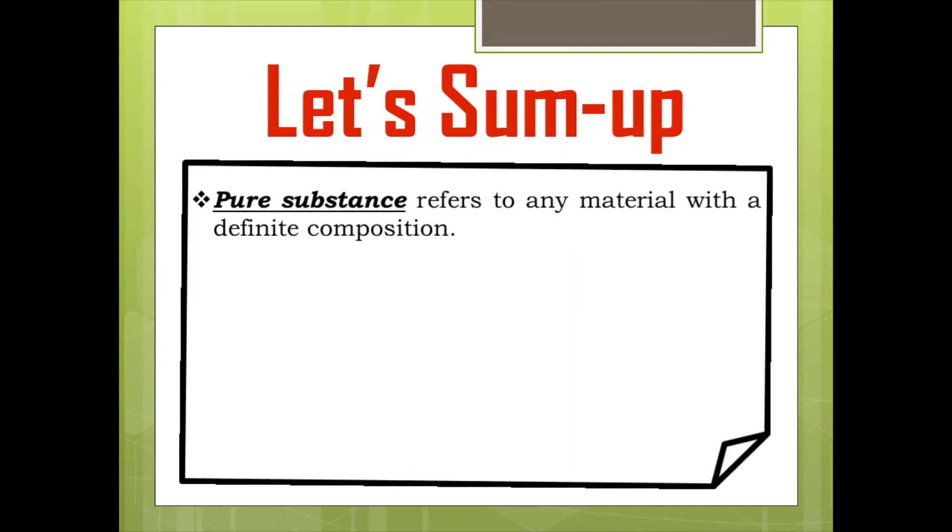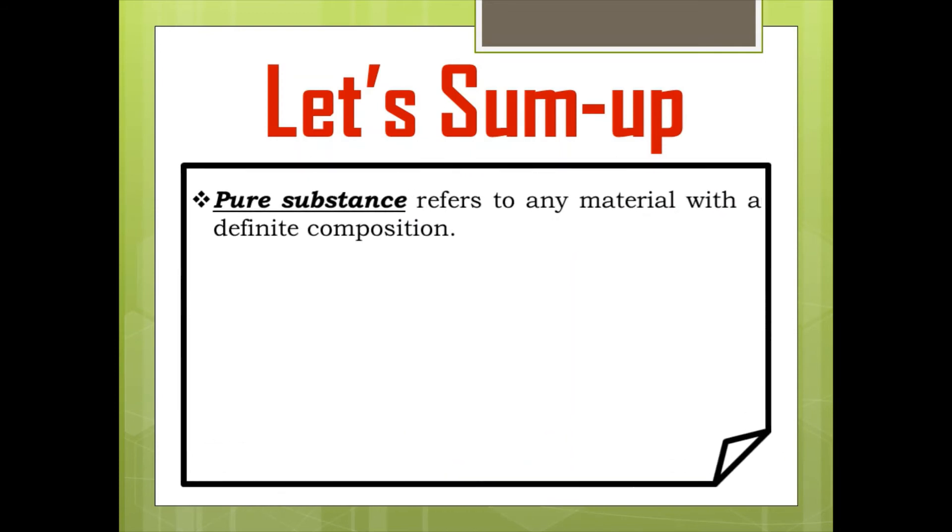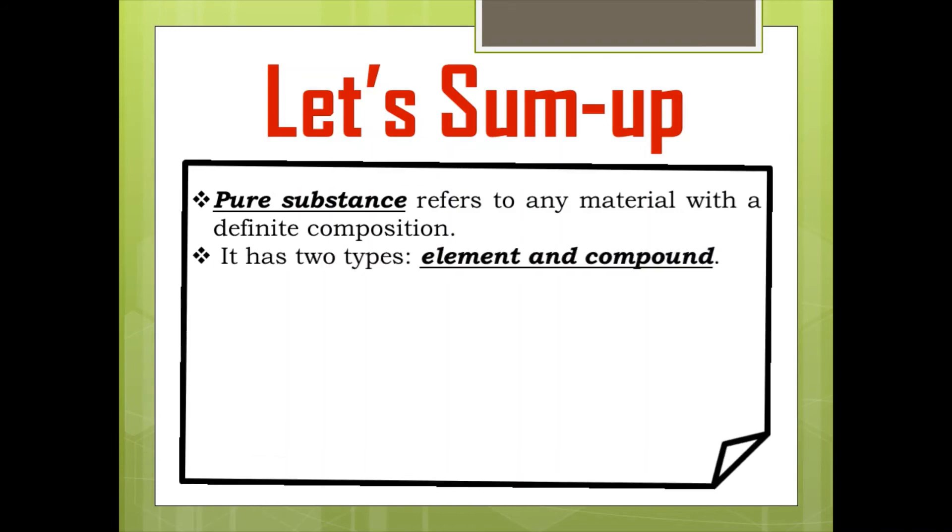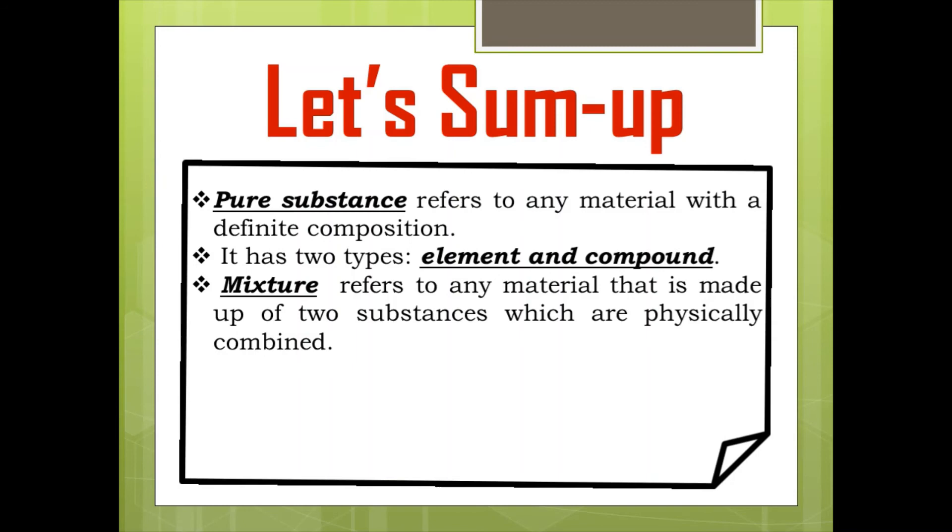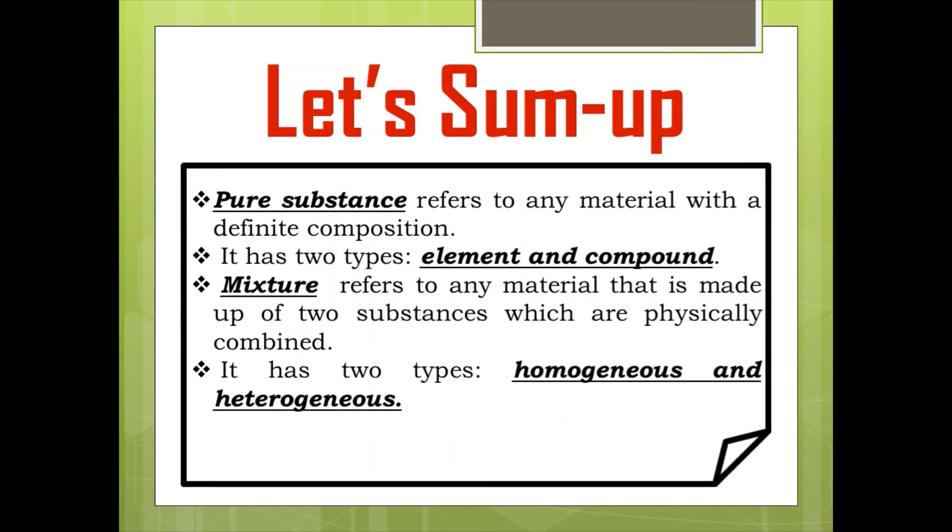Let's sum up the lesson. Pure substance refers to any material with a definite composition. The two types of pure substance are element and compound. Mixture refers to any material that is made up of two substances which are physically combined, and it has two types: homogeneous and heterogeneous mixture.